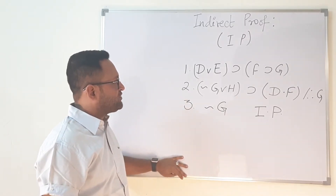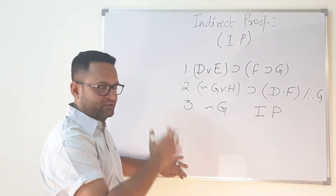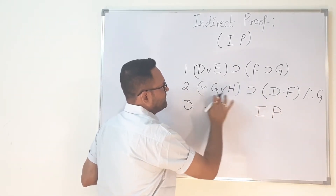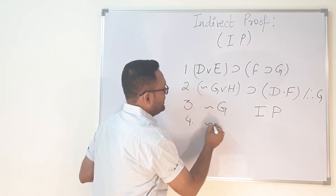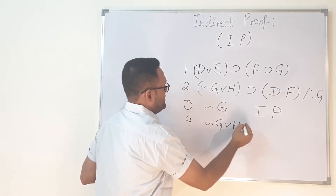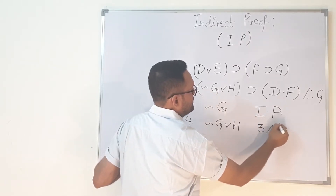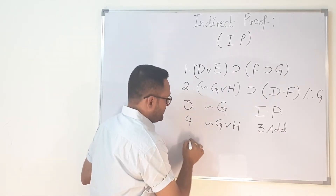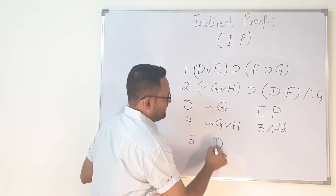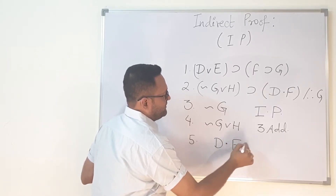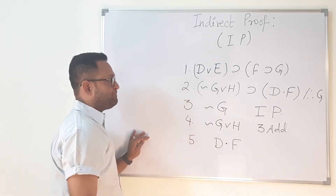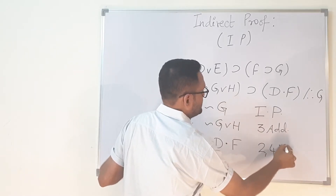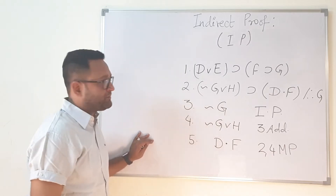Once you have taken negation of G, on step number four, we add H to get: negation G ∨ H. This is step three, Addition. Now, with line number two and this step, we apply Modus Ponens to get D · F — so this is steps 2, 4 Modus Ponens. Then on step five, we simplify to get D — this is step five, Simplification.